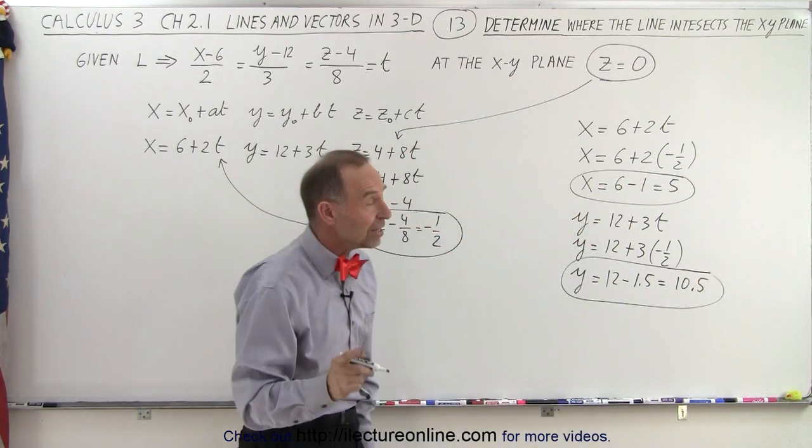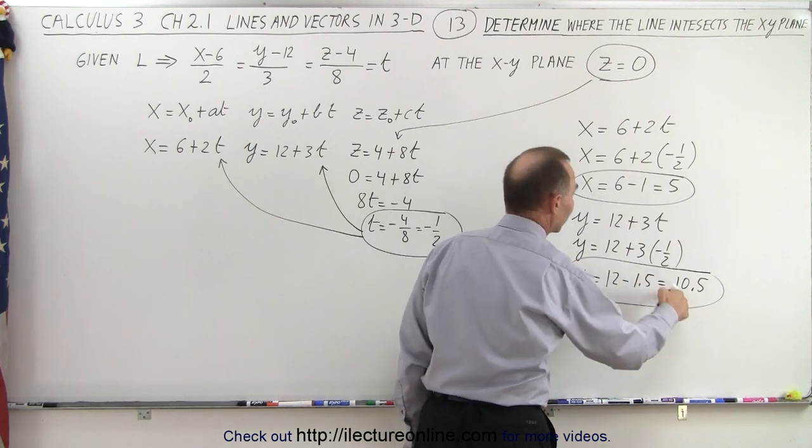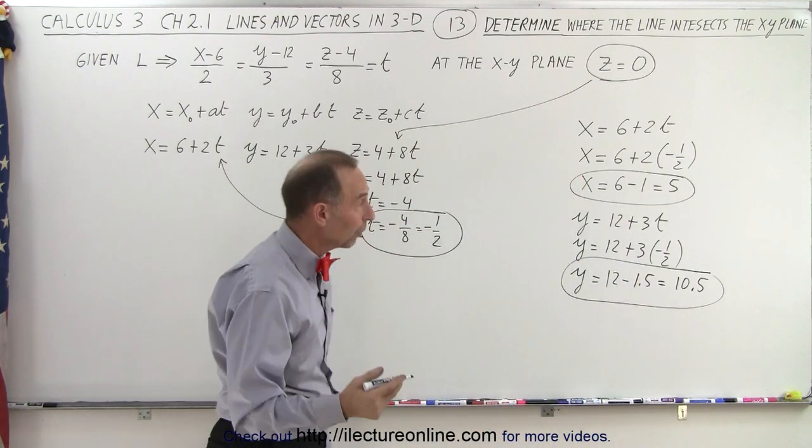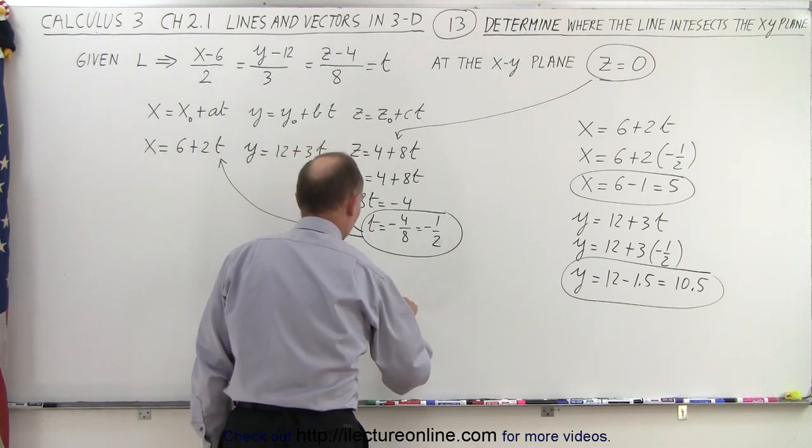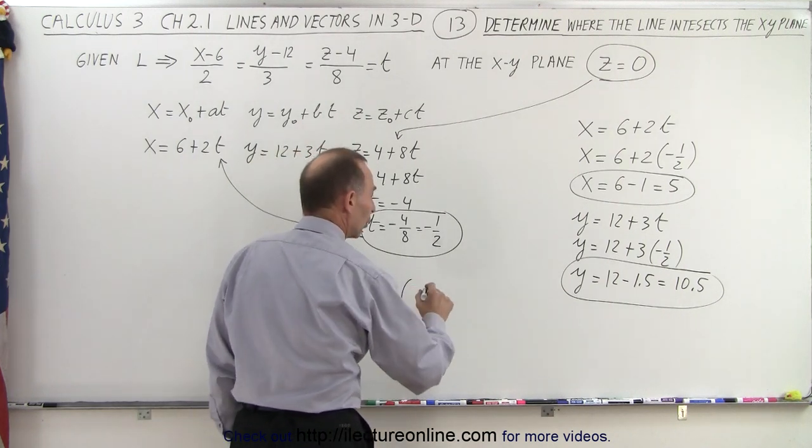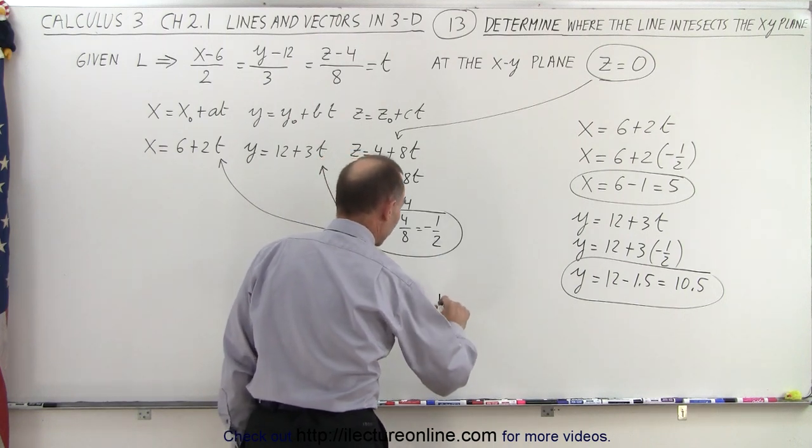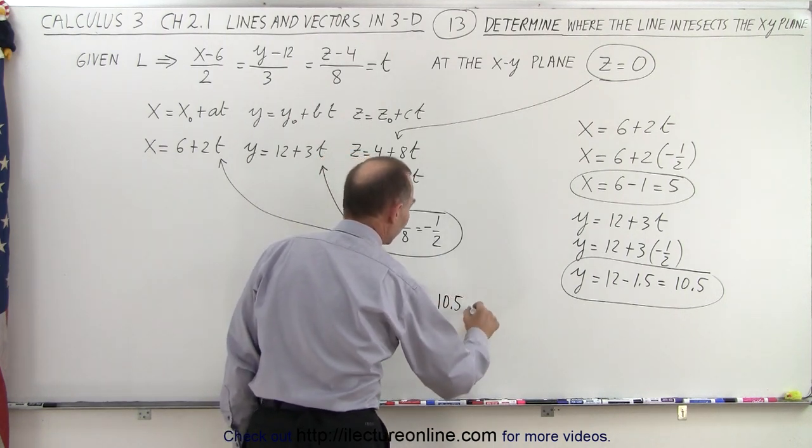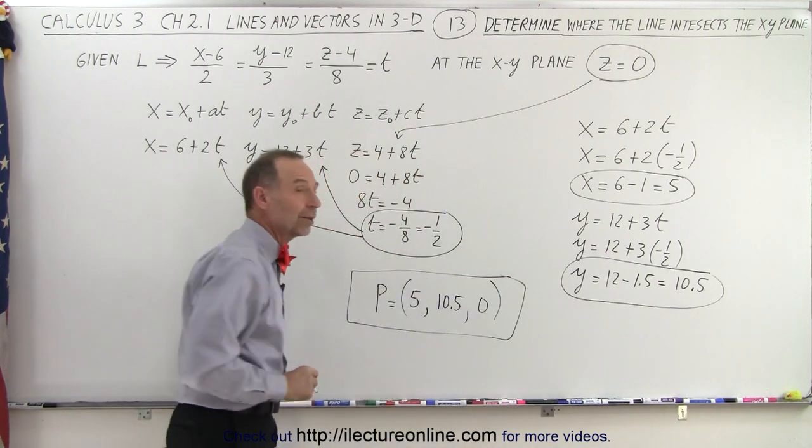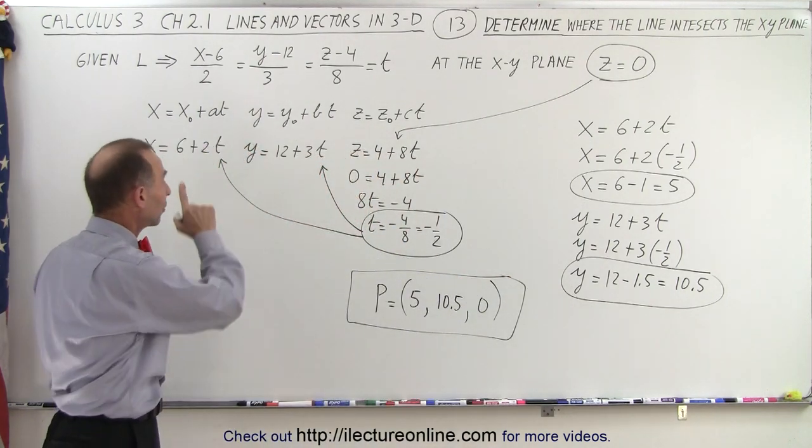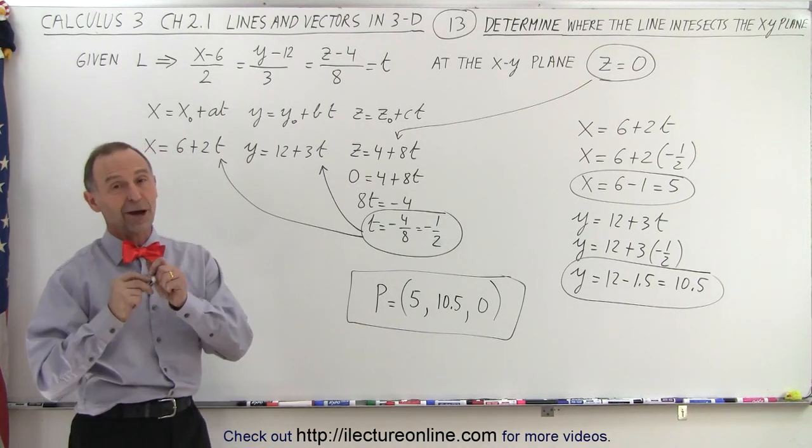That means that if z is equal to 0, x is equal to 5, and y is equal to 10.5, which means the point at which it crosses the xy plane is going to be equal to the coordinates. For x it's going to be 5, for y it's going to be 10.5, and for z it's going to be 0. So that's the location where that particular line given by that equation crosses the xy plane. And that is how it's done.